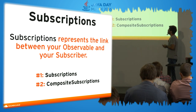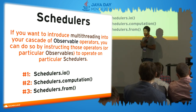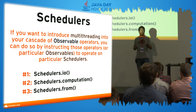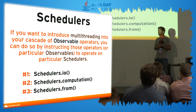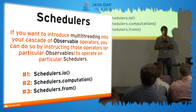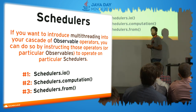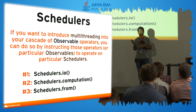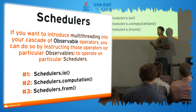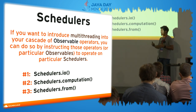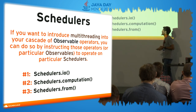We have schedulers. A scheduler is the easiest way to introduce multi-threading in your applications — you don't have to deal with thread synchronization. With just one line of code we can say: execute this job in this thread, and listen to these results in another thread. We are going to see an example of that.